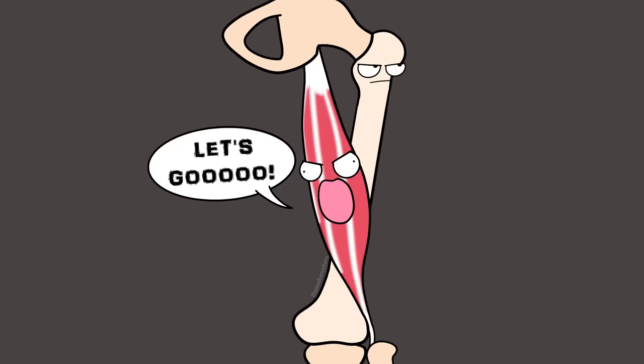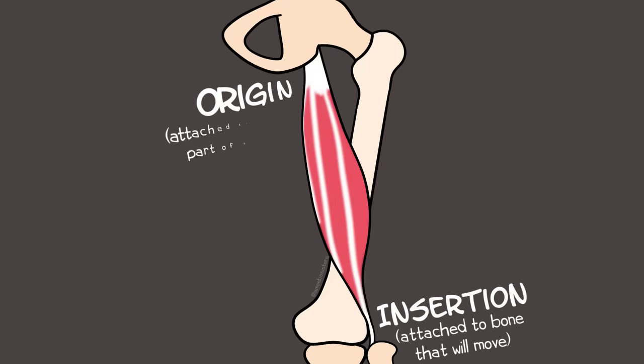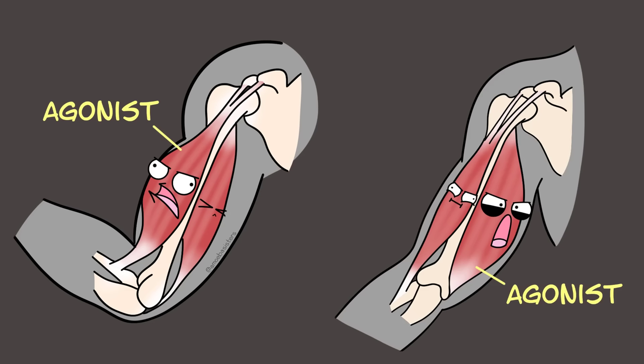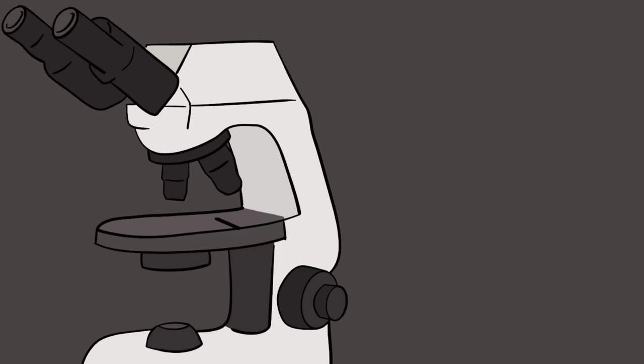Many skeletal muscles can pull on bones. The part that attaches to the bone that will be moved is called the insertion, and the part that attaches to a fixed part of the bone is called the origin. There could be several muscles involved in a single action. The main muscle doing the work — the prime mover — is called the agonist, whereas antagonists are muscles that do the opposite action, which is helpful for keeping position.